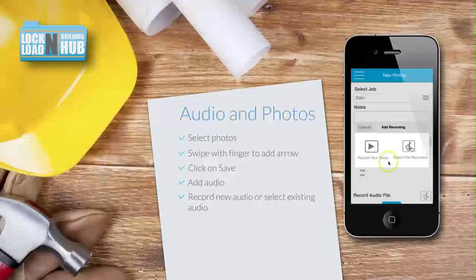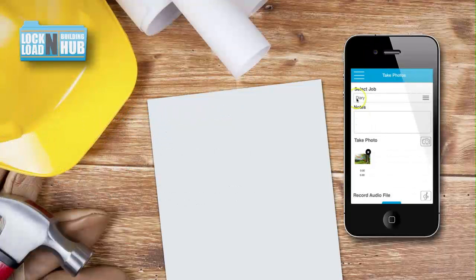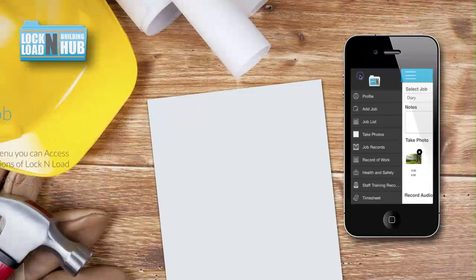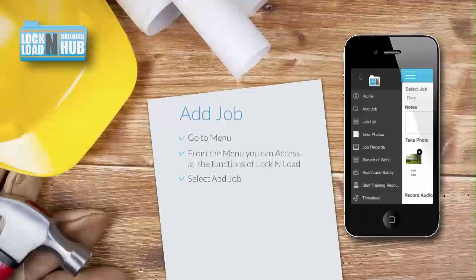You can either make audio notes by speaking into the app, or you can select a pre-recorded audio note in your phone. Also, remember to click here — the menu — if you ever want to get to the menu on the Lock and Load app. From the menu, you can access all of your functions on the Lock and Load app.